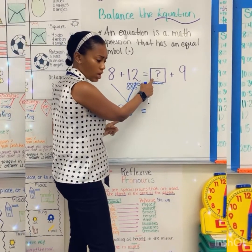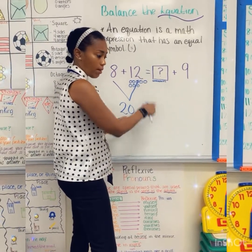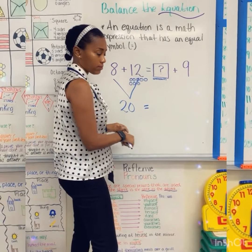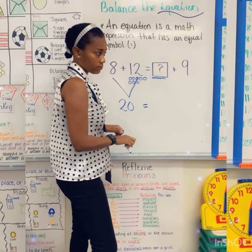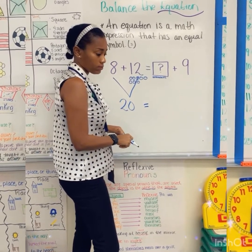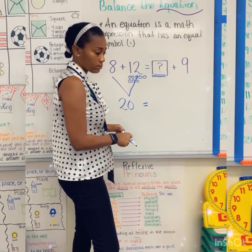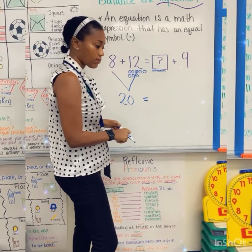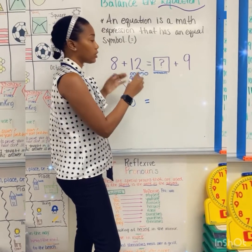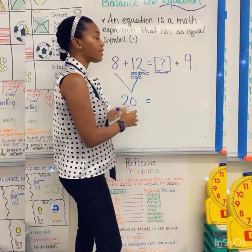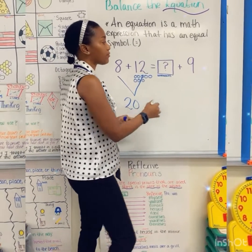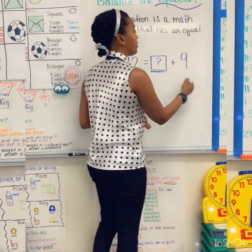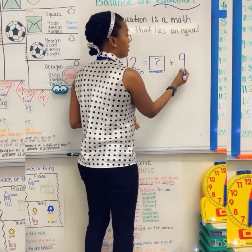What do I do about solving this unknown number? You count on from 9 until you get to 20. So use the count-on method again — count from 9 until I get to 20. Very good.